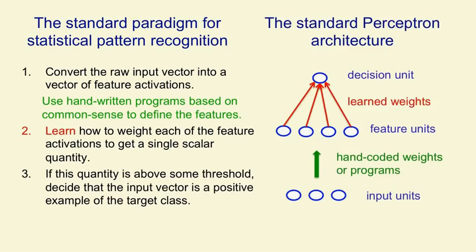There are actually many different kinds of perceptron, but the standard kind, which Rosenblatt called an alpha perceptron, consists of some inputs which are then converted into feature activities — perhaps by things that look a bit like neurons — but that stage of the system does not learn. Once you've got the activities of the features, you learn some weights so that you can take the feature activities times the weights and decide whether or not it's an example of the class you're interested in by seeing whether that sum exceeds a threshold.